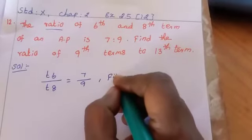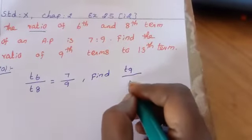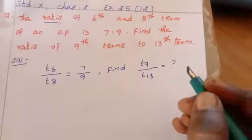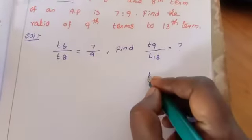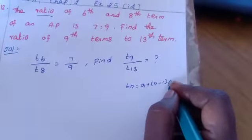We want to find the ratio of T9, 9th term, divided by T13th term is how much. Now we know TN is what? A plus N minus 1 into D.